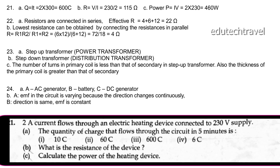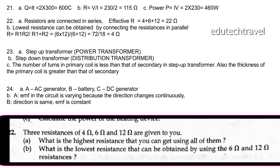Question 21: 2 ampere current flows through an electric heating device connected to a 230 V supply. The quantity of charge Q = IT = 2 × 300 = 600 coulombs. The resistance R = V/I = 230/2 = 115 ohm. Power = IV = 2 × 230 = 460 watt.